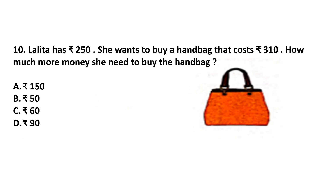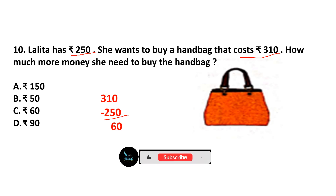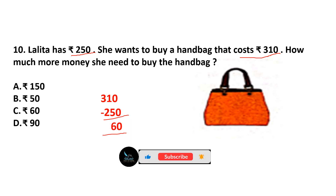Question number 10. Lalita has rupees 250. She wants to buy a handbag that costs rupees 310. How much more money does she need to buy the handbag? The cost of the handbag is 310 and she has 250. So: 310 minus 250. That is 0 minus 0 is 0, 11 minus 5 is 6, giving 60. Answer is option C.